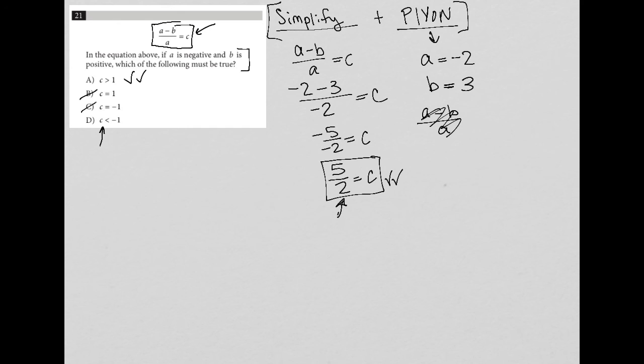And lastly, choice D says that C is less than negative one. And that's also not true. So that just makes me feel even better about choice A being the correct answer.